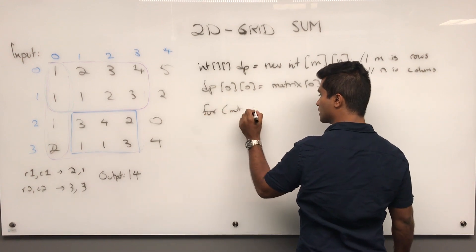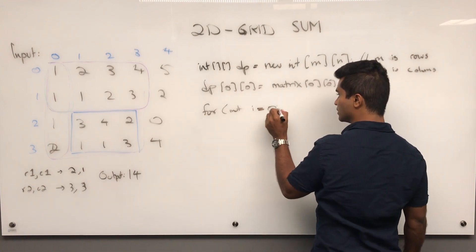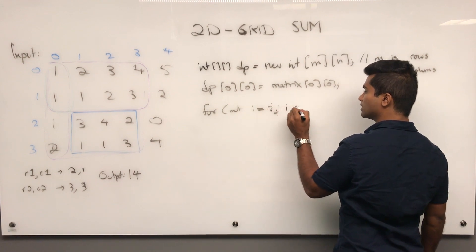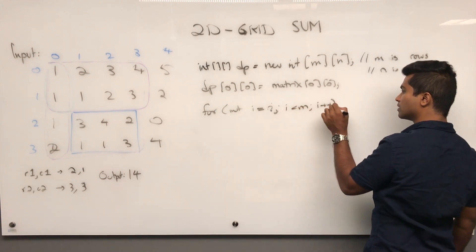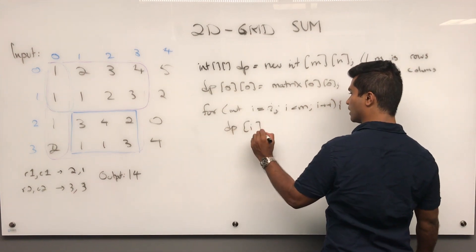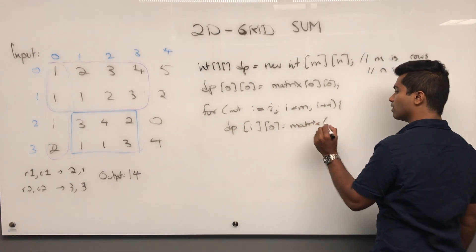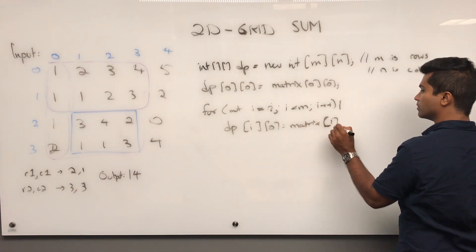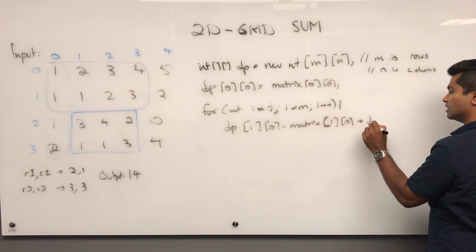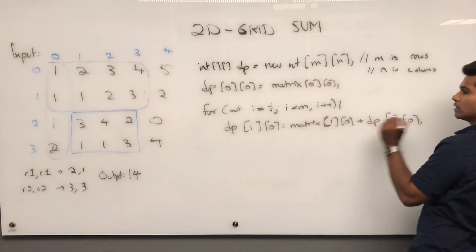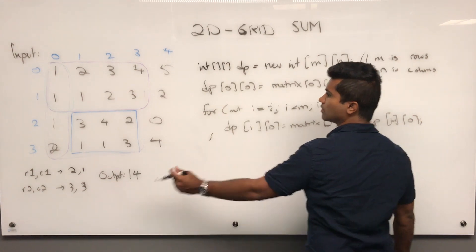Now we add a cross like that. So for int I is equal to 1, I is less than M, I plus plus, DP of I of 0 is going to be matrix of I of 0 plus DP of I minus 1 and 0. That's going to fill out this.